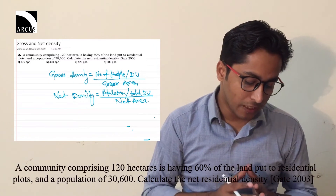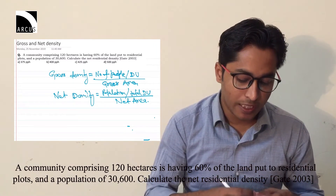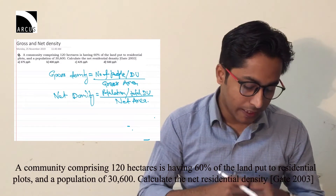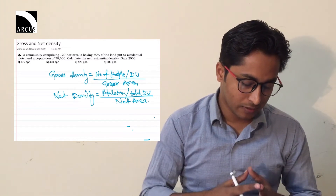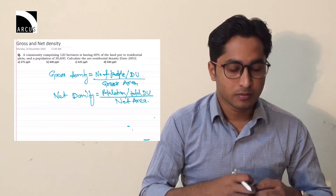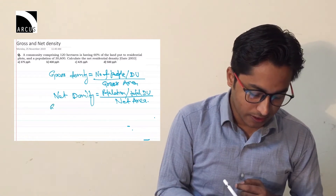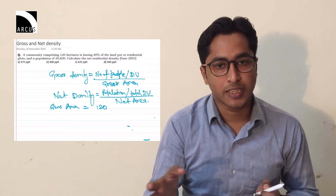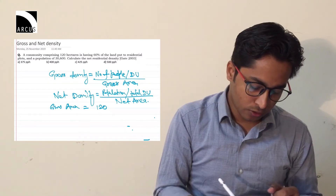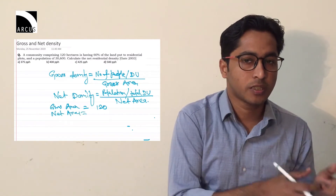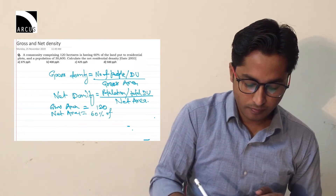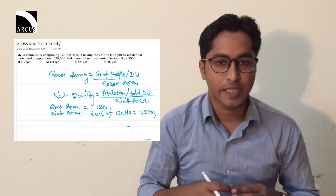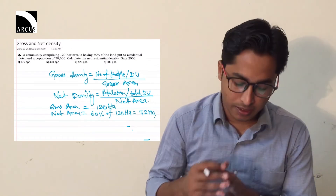Let's solve a previous GATE question asking to calculate net residential density. The question: a community comprising 120 hectares has 60 percent of the land put to residential plot and a population of 30,600 — calculate the net residential density in PPH. This was asked in 2003. The gross area is 120 hectares. Since only 60 percent is for residential use, the net area is 60 percent of 120 hectares, which equals 72 hectares.